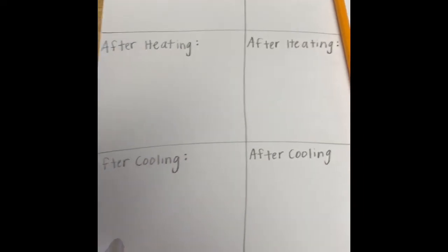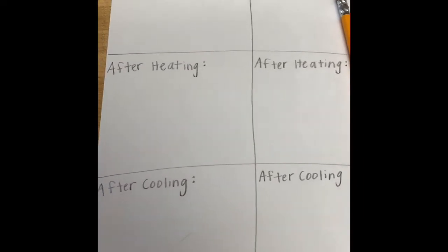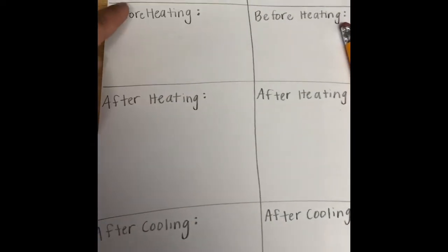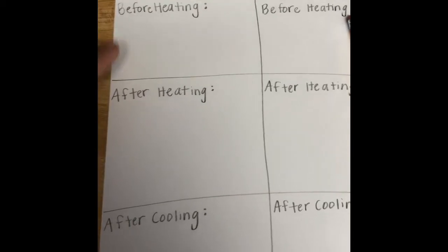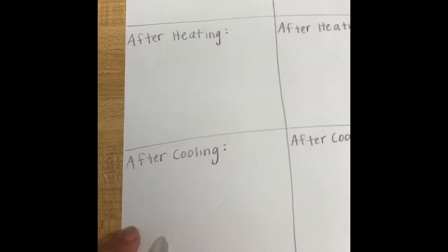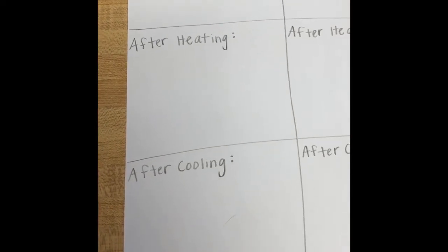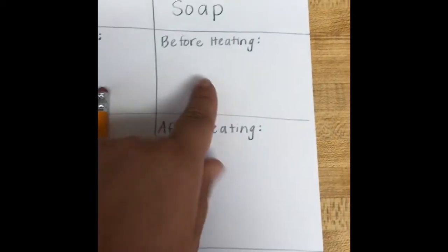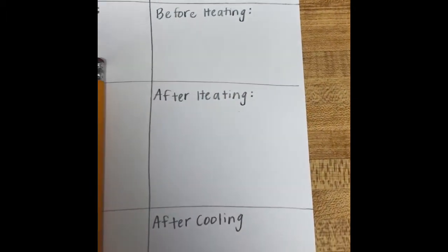Before we can start our experiment, we have to make a chart in our science journal or on a piece of paper. In this column you can see that I have milk. I have a section for before heating the milk, a section for after heating the milk, and then a section for after cooling. You can also create a section for soap — before heating, after heating, and after cooling.